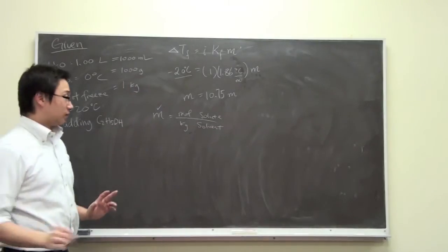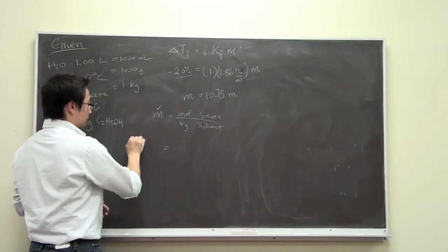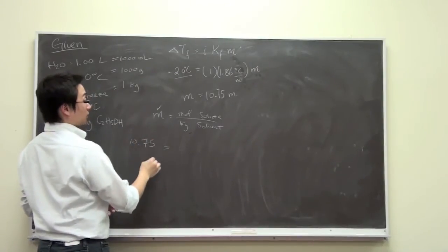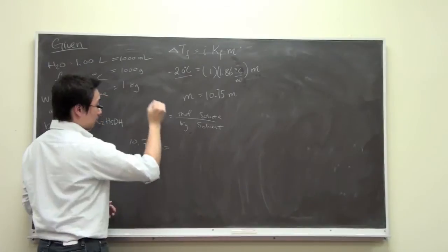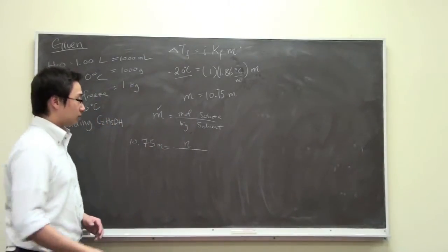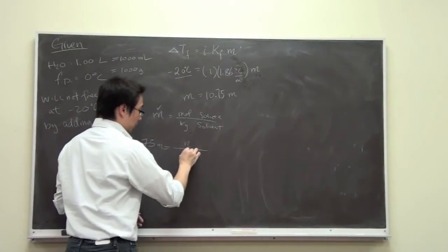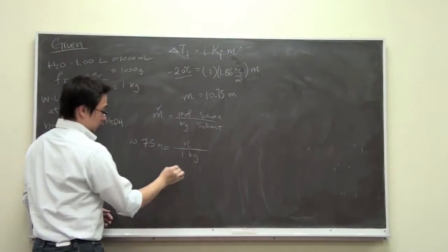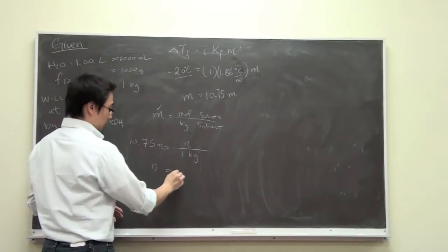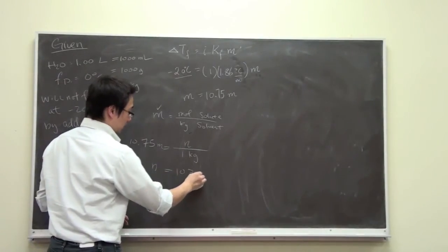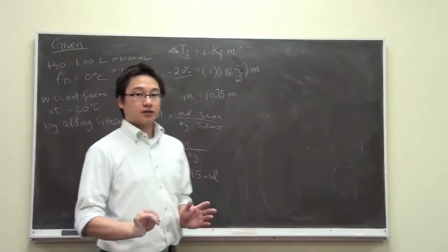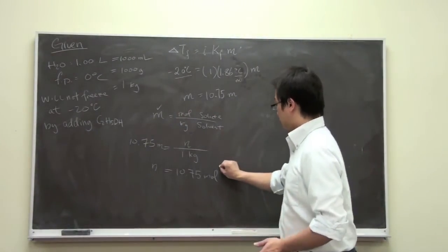So that is a very nice calculation to do. So molality is 10.75 molal. We don't know the number of moles. That's what we are trying to find out. And we have one kilogram. So just use your hand, not even use your calculator. You can find out that the number of moles is 10.75 moles. That is the number of moles of the solute which is the ethanol.